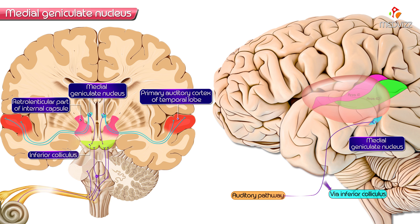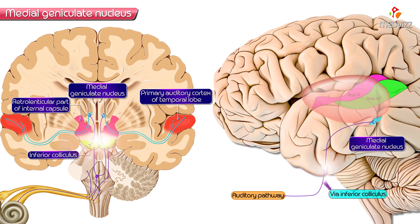Whatever information is carried to the inferior colliculus in terms of auditory signals, these inputs in turn send axons to the Medial Geniculate Nucleus of the thalamus, which is also called the Medial Geniculate Body.